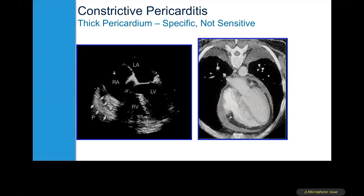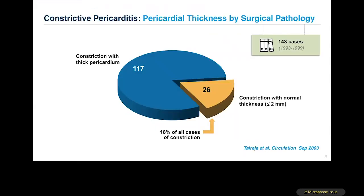However, it's extremely important to understand that thickening of the pericardium does not mean constriction. It could be present with hemodynamic features of constriction, causing constrictive pericarditis, but isolated thickening may not always be consistent with the clinical syndrome. A study from Mayo Clinic showed that pericardial thickness can be normal in almost 25% of patients with constrictive pericarditis.